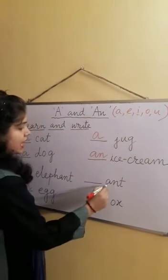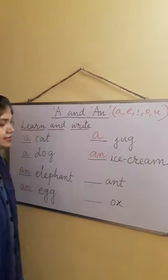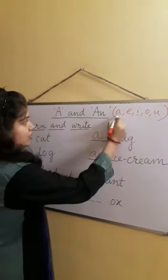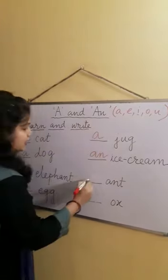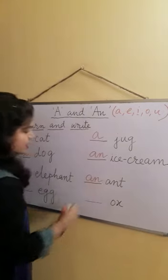An ice cream. Ant - A-N-T, ant. A is a vowel, so we will write An. An ant.